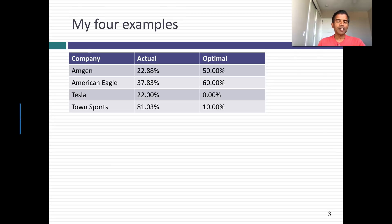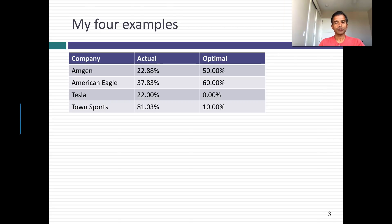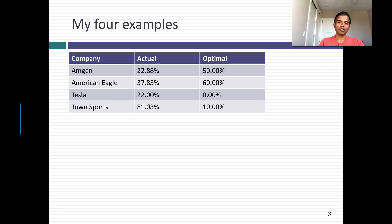My third company is Tesla, the company that Elon Musk created that makes electric cars and batteries, and has been one of the stars of the stock market for the last five, six, or seven years. Its actual debt ratio is about 22 percent and its optimal debt ratio is zero percent. Why? Because the company doesn't make money, so if you don't make money it's very difficult to sustain a debt ratio. My last company is Townsports, which operates fitness clubs across the country. Its actual debt ratio is sky-high at 81 percent and its optimal is about 10 percent. So I have two under-levered companies and two over-levered companies.